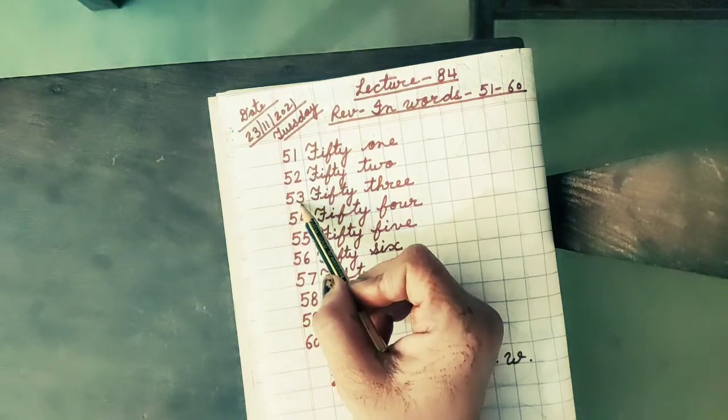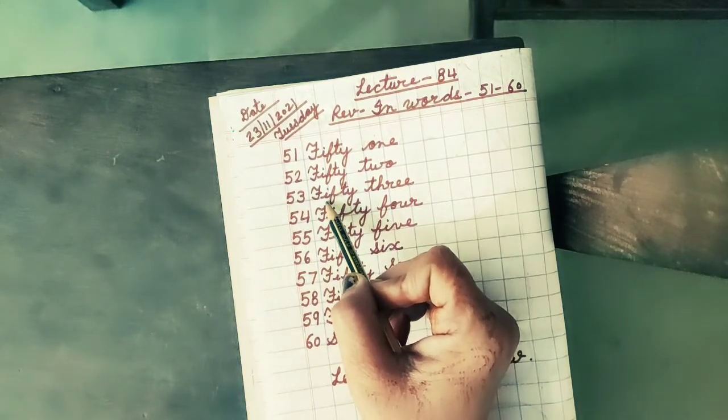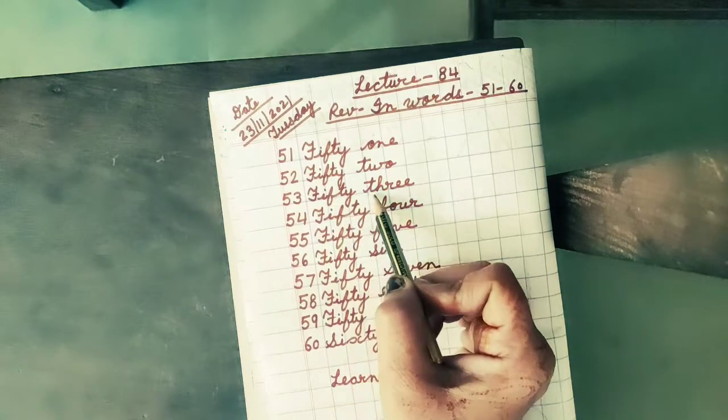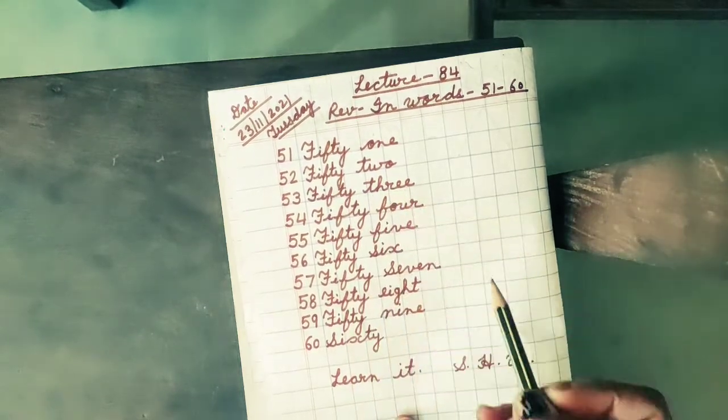Next number is 53. The spelling of 53 is F, I, F, T, Y, 50, T, H, R, E, E, 3.